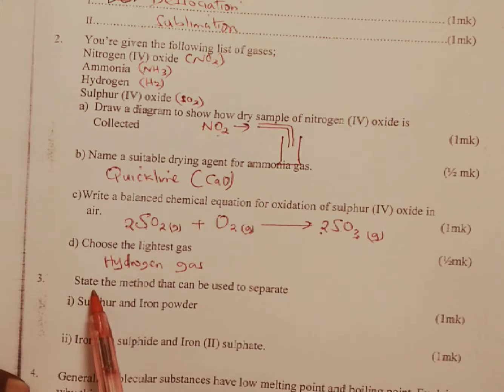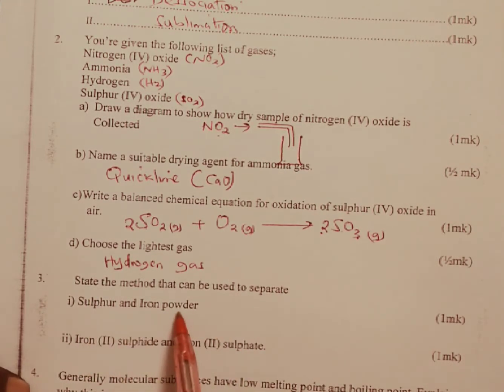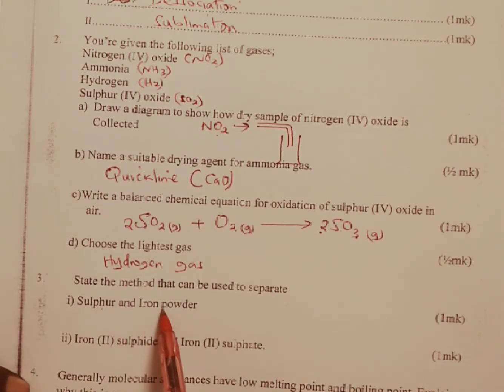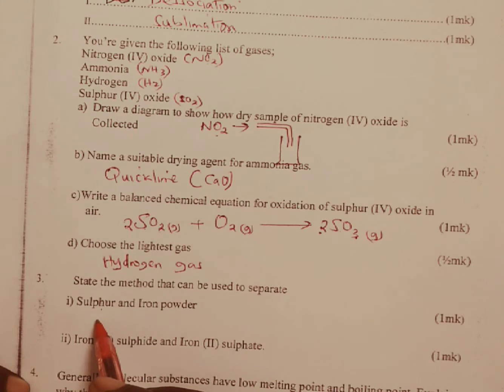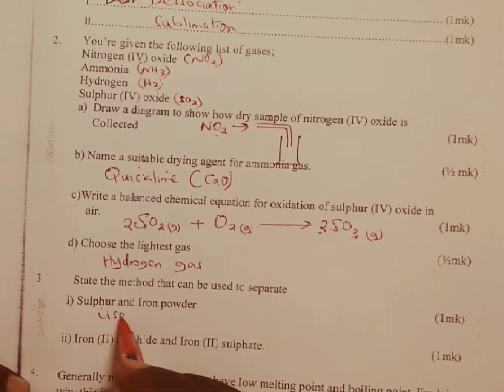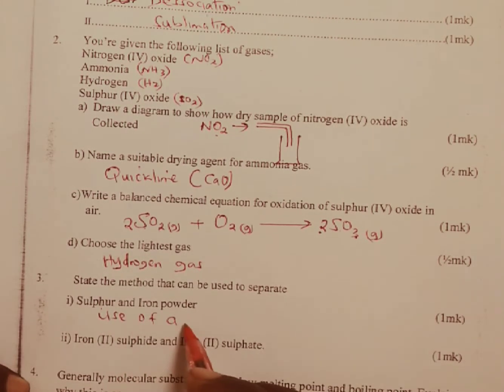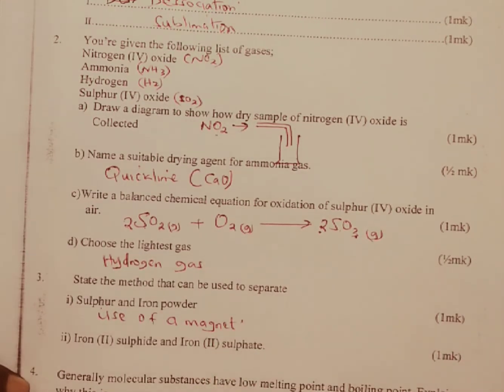Question three: state the method that can be used to separate sulfur and iron powder. We know sulfur is non-magnetic and iron is magnetic since it can be attracted by a magnet. Therefore the method of separation between sulfur and iron is by the use of a magnet.